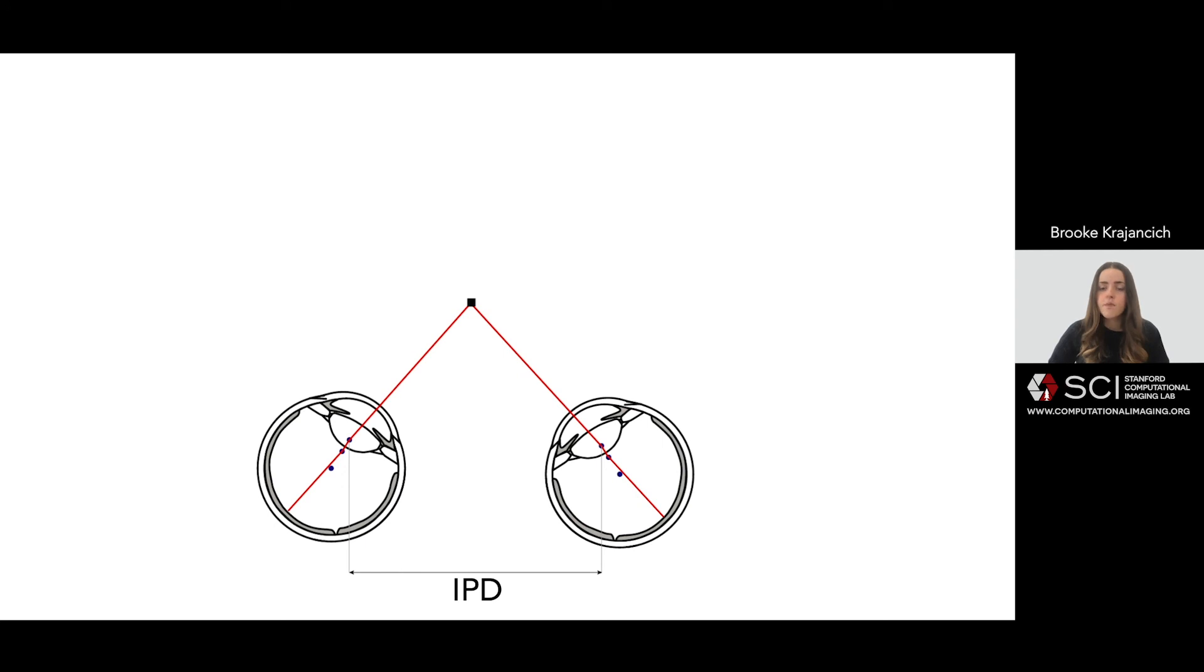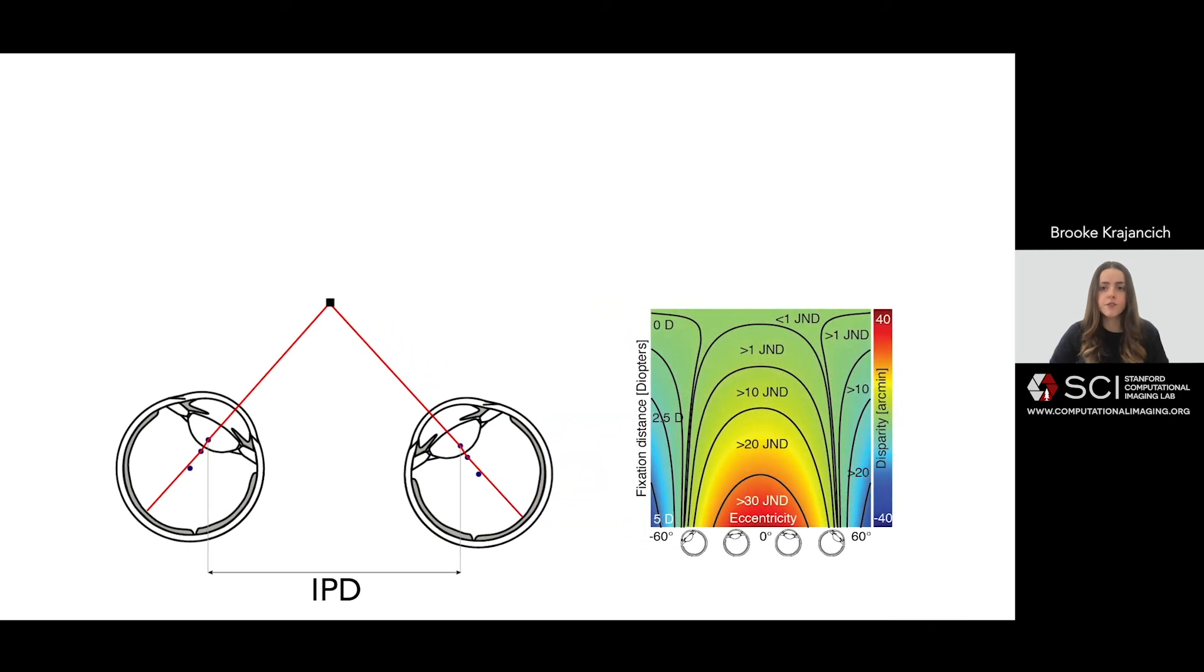A seemingly small shift, but failing to account for it can lead to significant errors in disparity calculation, as simulated here for an average observer. This has the effect of distorting the depth space at those closer distances, and leading to objects appearing closer than intended by the rendering.